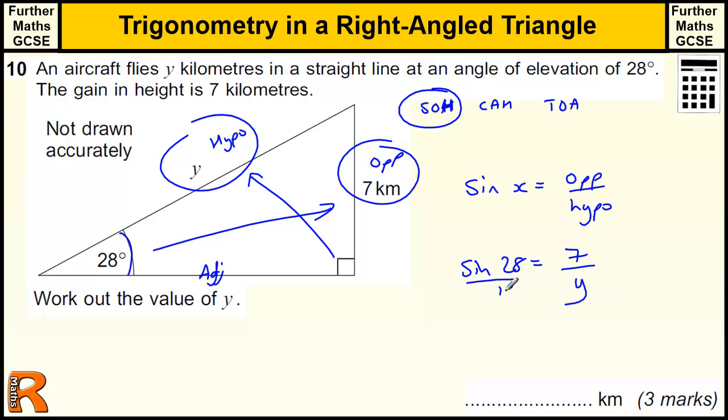I could swap the 1 and the 7 around, swap the y and the sine 28. So if I swap these two over, I get y equals, or y over 1, which is just y equals 7 over sine 28.